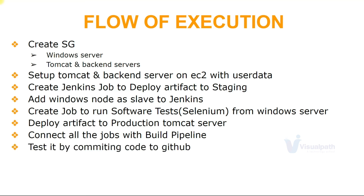We'll test everything by making a code change. When we make a code change, it will fetch the code, build it, test it, deploy it to the staging environment, run more tests, and then finally deploy it to the production environment. Production deployment will require approval, so the trigger will be manual — the job will execute automatically but the trigger will be manual. There are a lot of things to do, so let's get started.